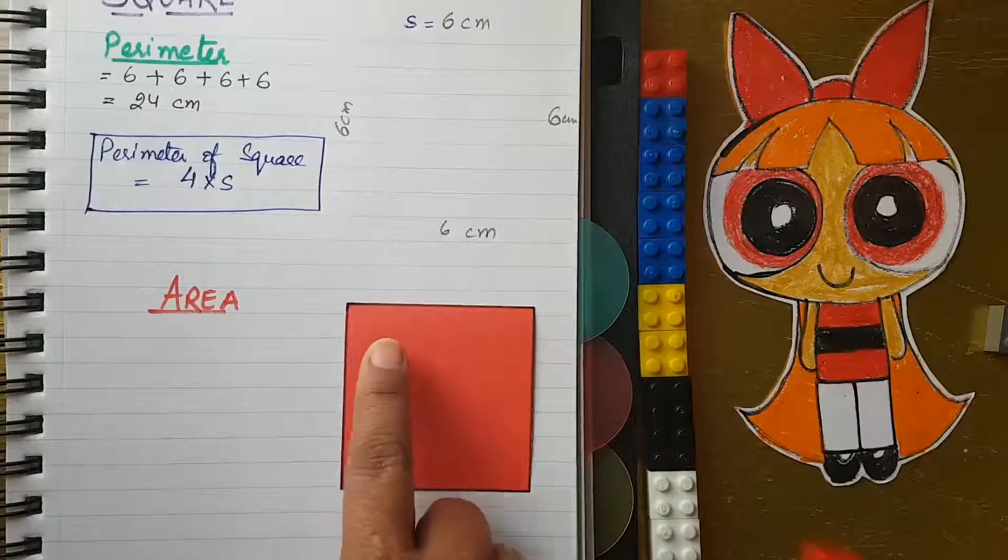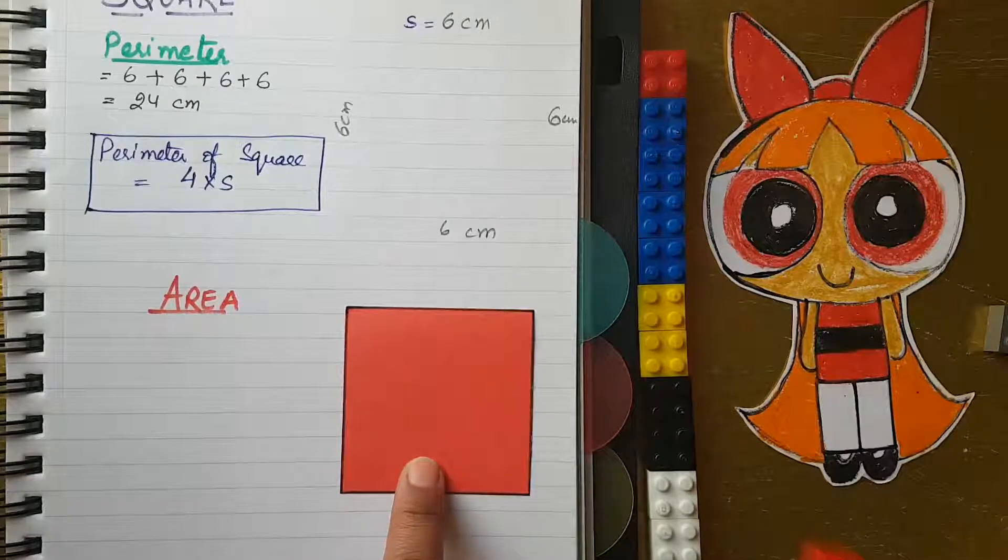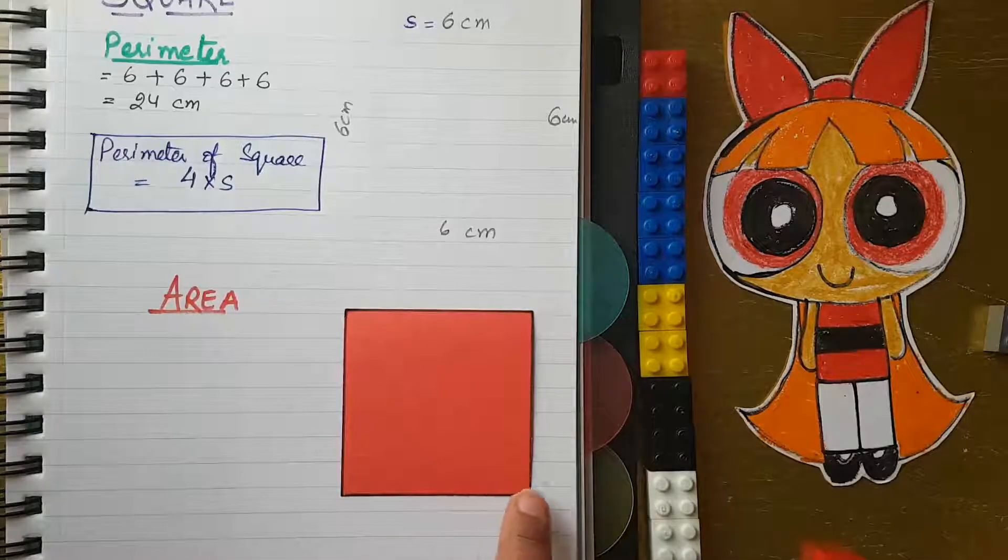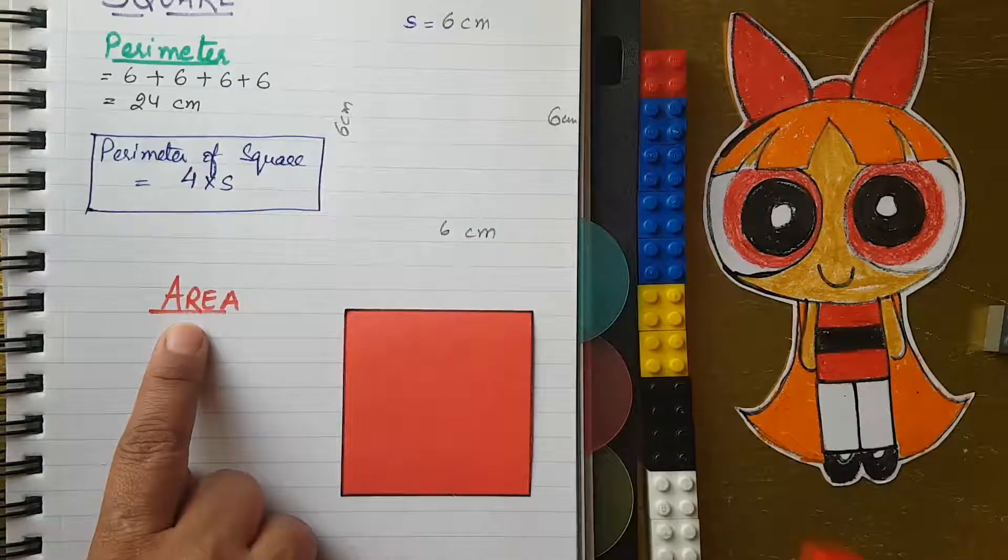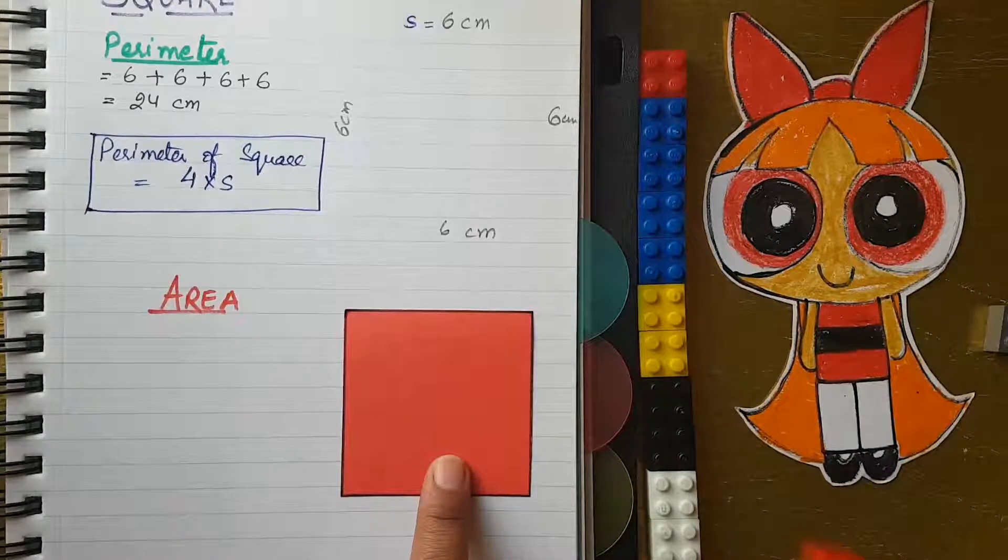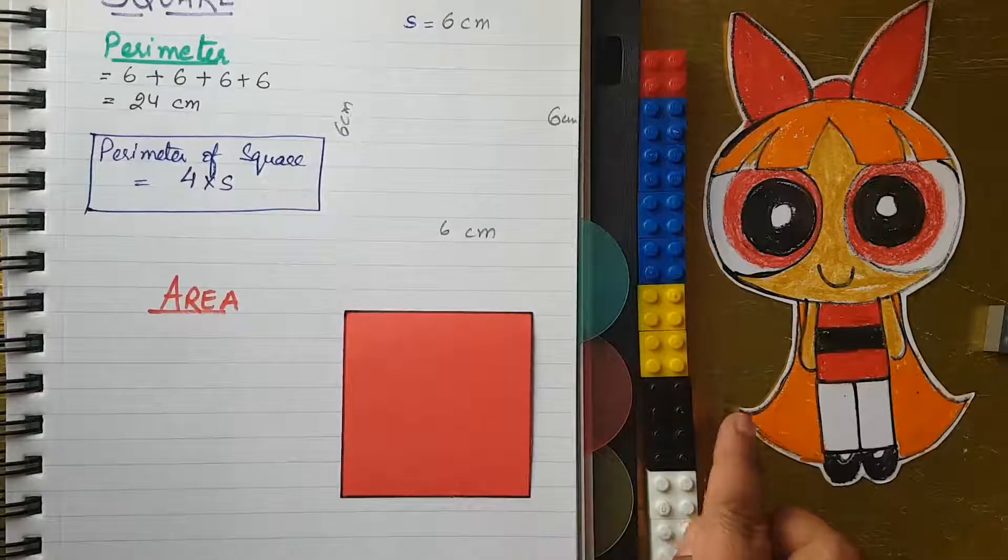This red color, the whole portion, that is the area. So area of a square is explained as the space occupied inside the square. First you found the perimeter which is the boundary, and now area is the space occupied inside the square.